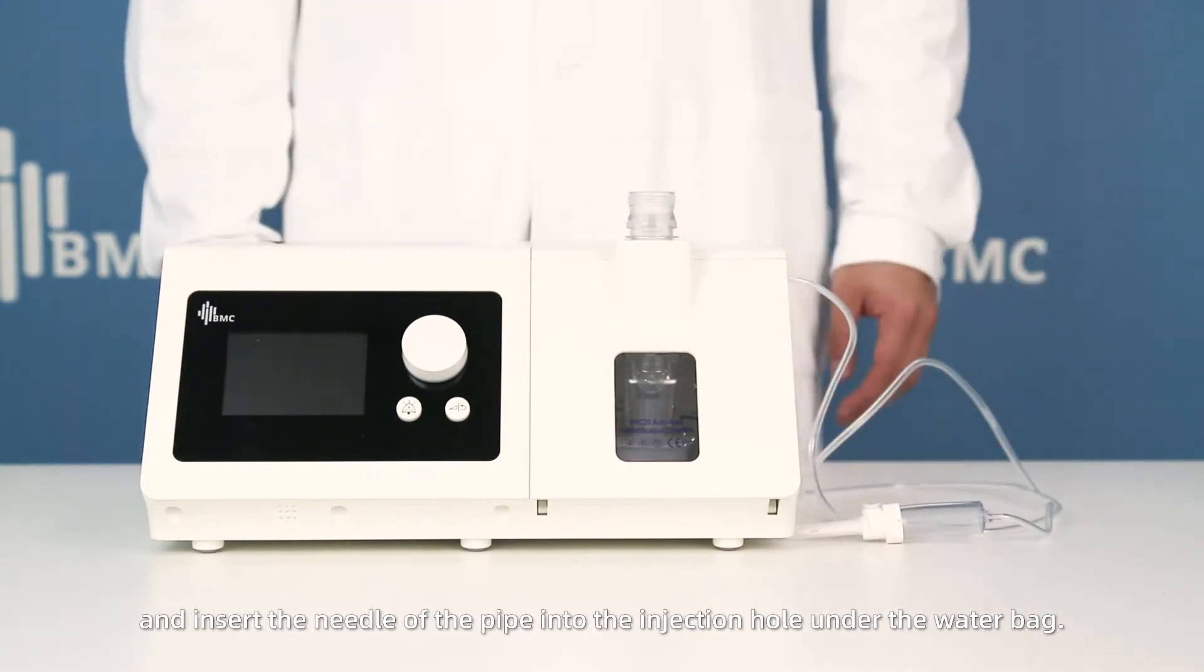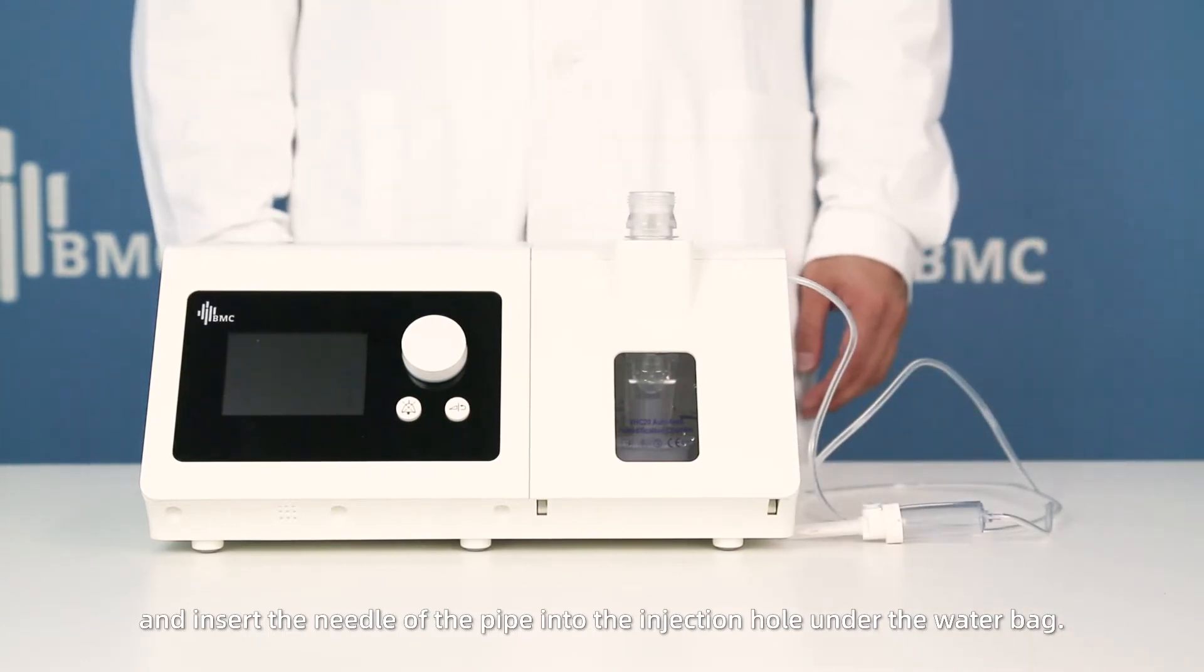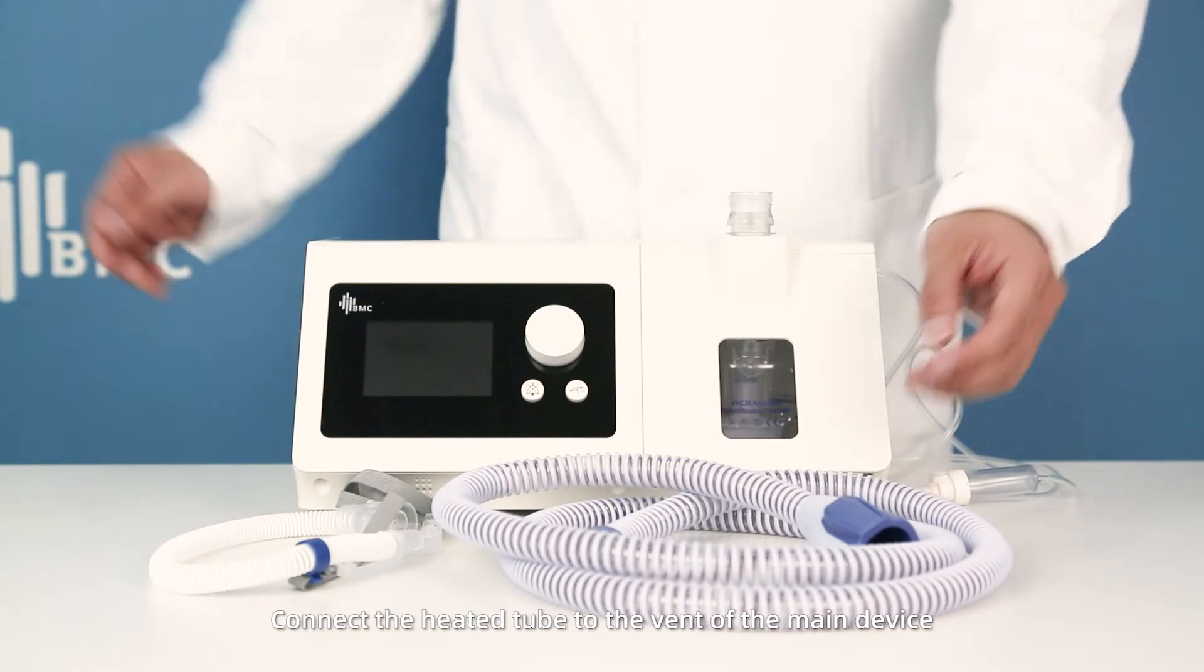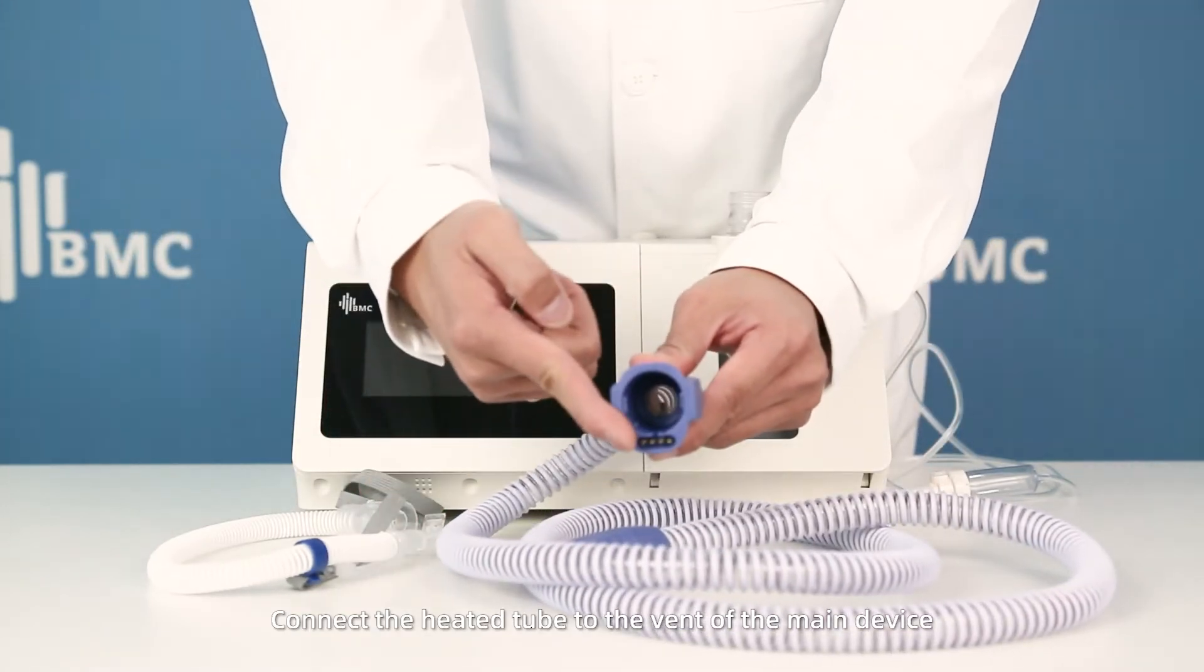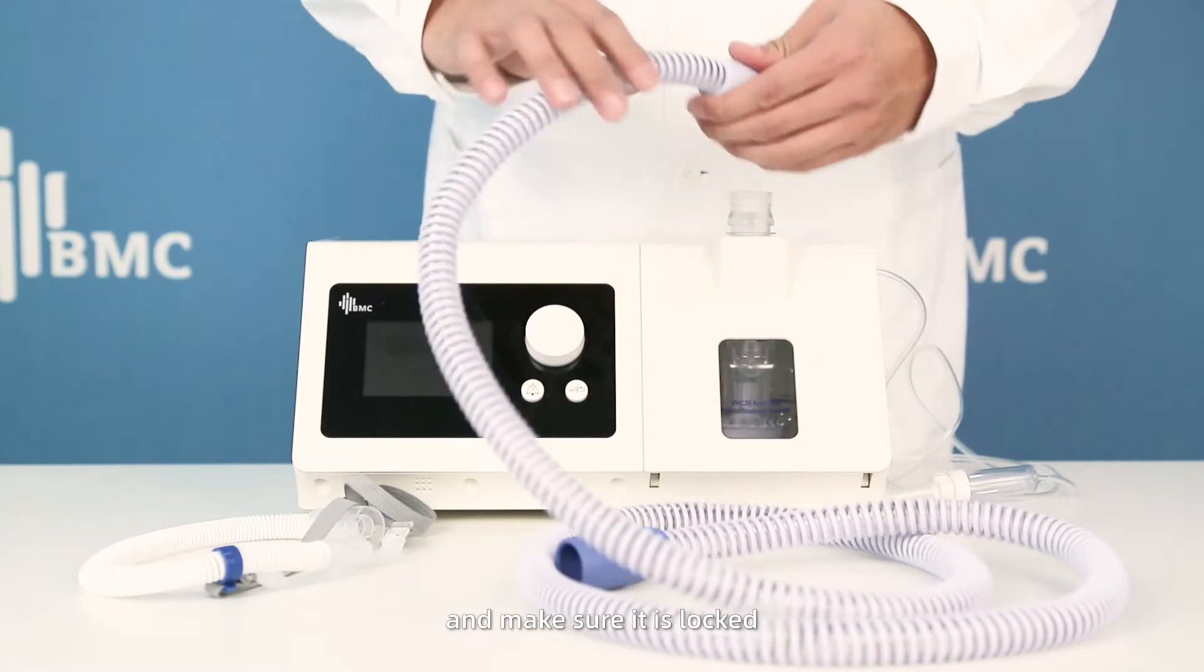Insert the needle of the pipe into the injection hole under the water bag. Connect the heated tube to the vent of the main device and make sure it is locked.